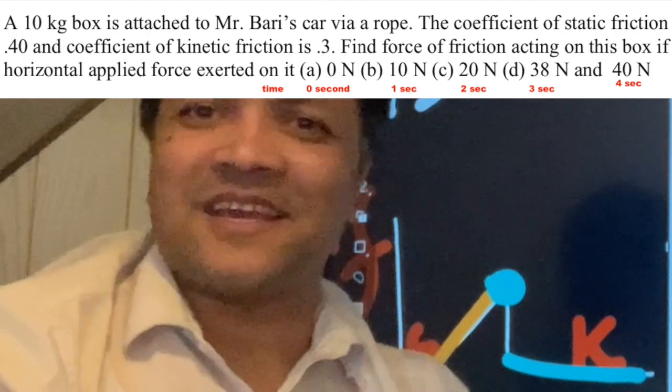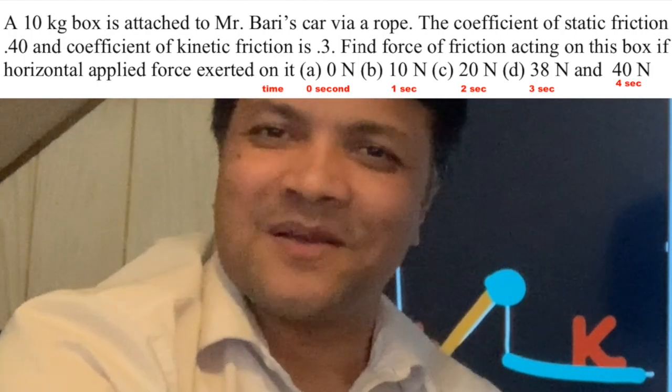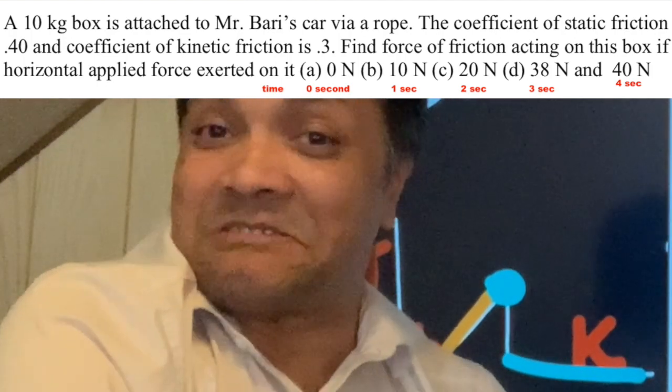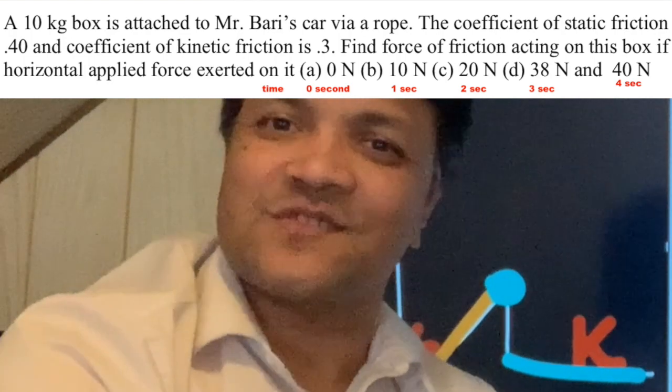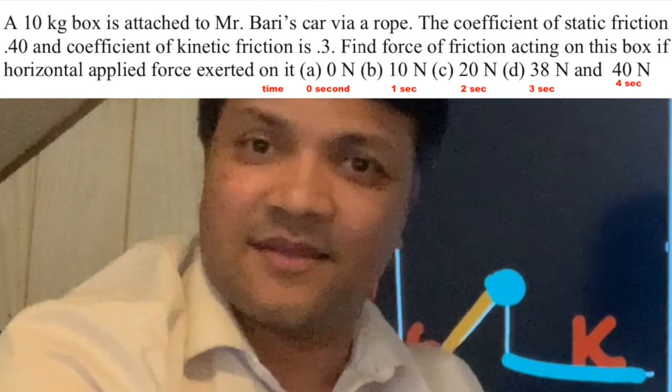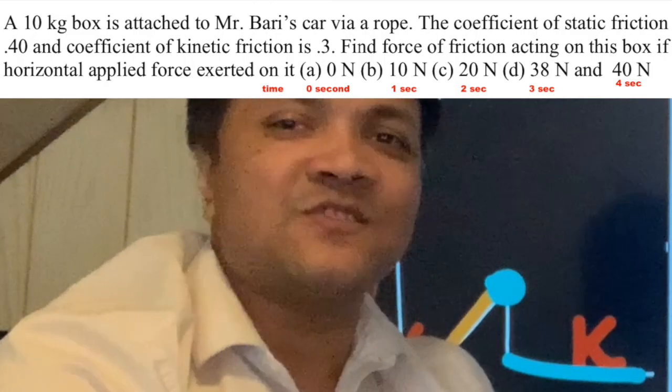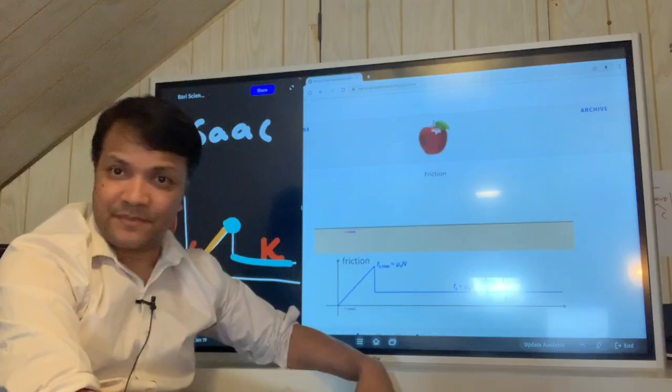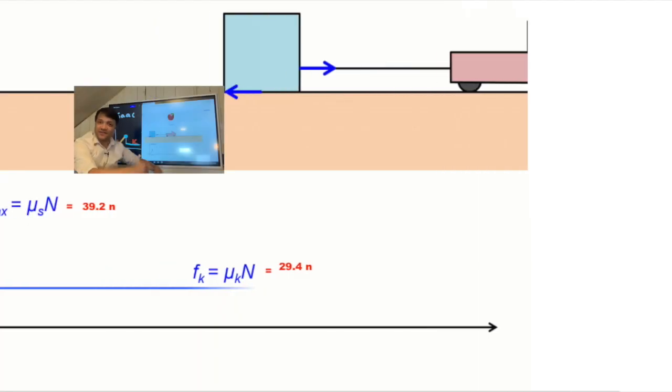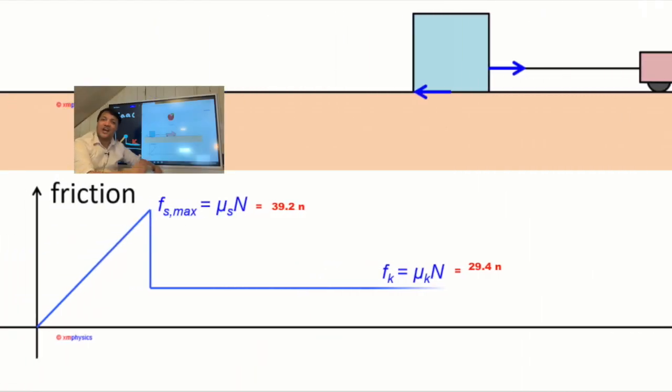So now Mr. Barry applied 40 Newtons. He realized that 38 is not enough to move the box. So he applied 40 Newtons. Now what happened? When he applied 40 Newtons, as you see that 40 Newtons is more than that maximum static friction which is 39.2. Now the box will start moving.